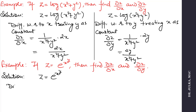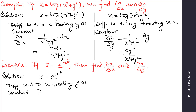When we differentiate with respect to x, treating y as a constant, we will get ∂z/∂x equal to e raised to the power x^y — the derivative of e^(x^y) keeps e^(x^y) as it is — and the derivative of x^y with respect to x is y·x^(y−1).